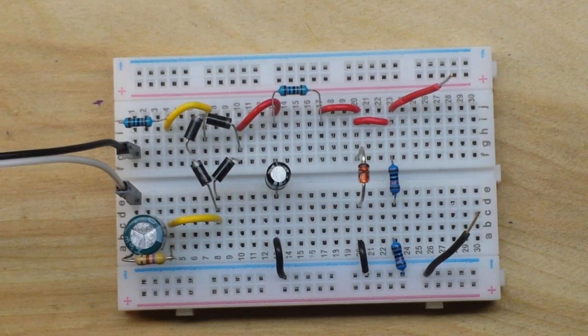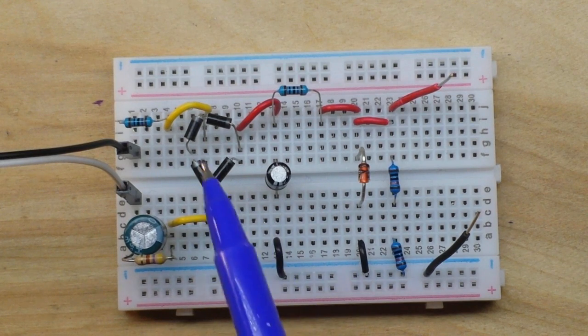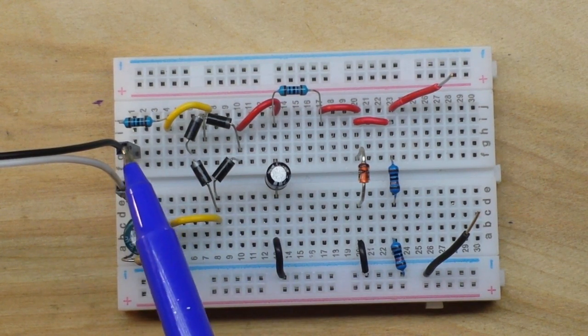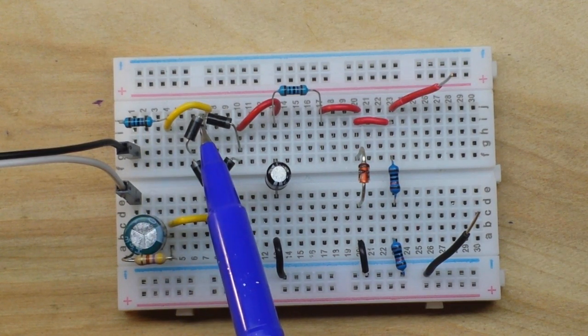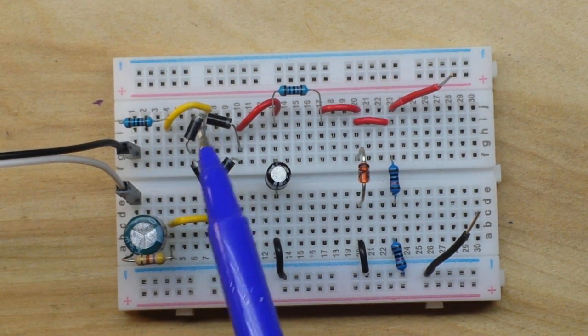And here's the circuit that we just talked about. So here's our AC input here, there's our 100 ohm resistor coming over to feed one side of the bridge rectifier.